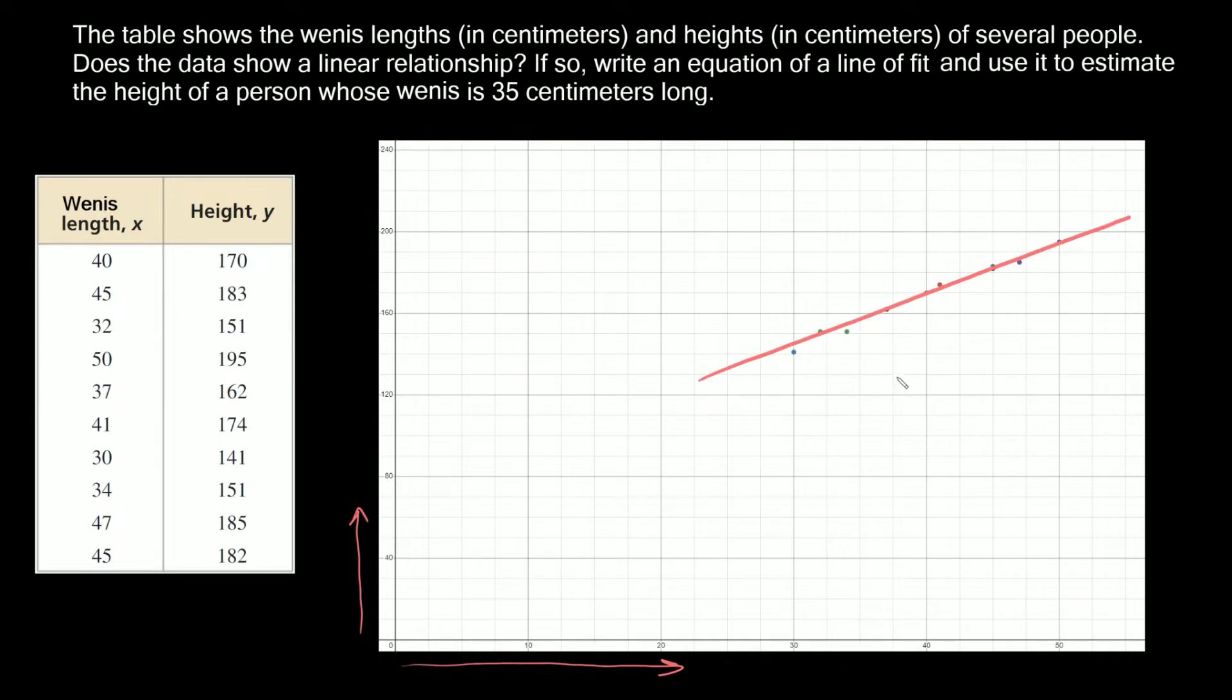The first thing we have to do is pick two points that this line runs through. The two points I'm going to pick are this one at 40 comma 170 and another point on this line at 50 comma 195. You'll see that these two points are over here also: 40, 170 is the first one and 50, 195 is the second.